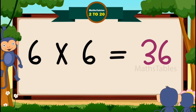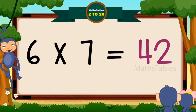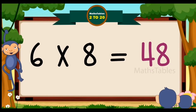Six sixes are thirty-six. Six sevens are forty-two. Six eights are forty-eight.